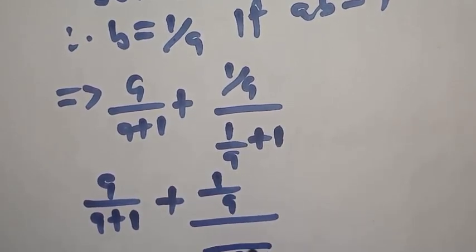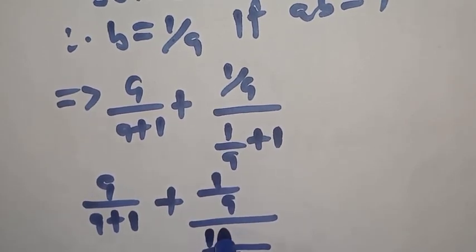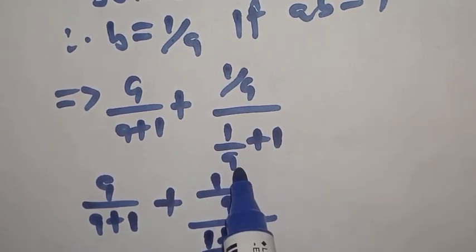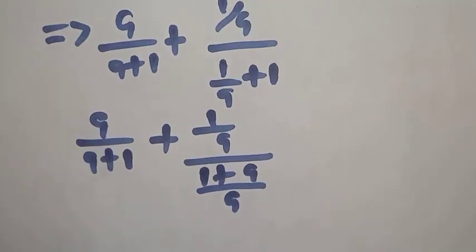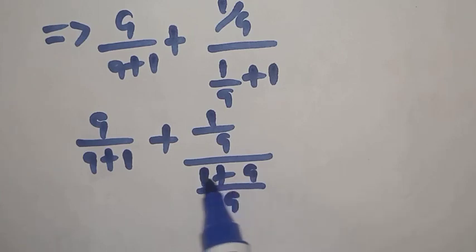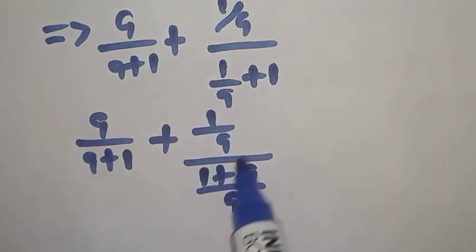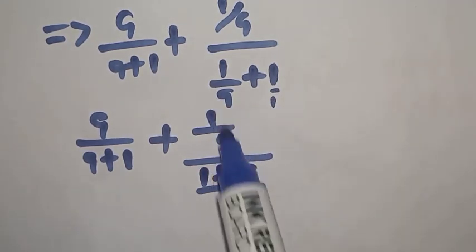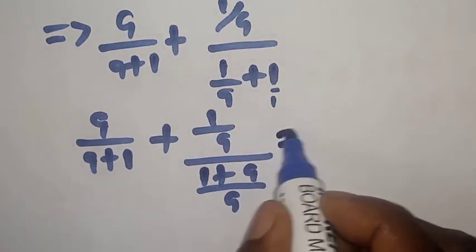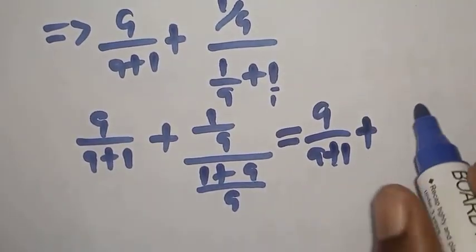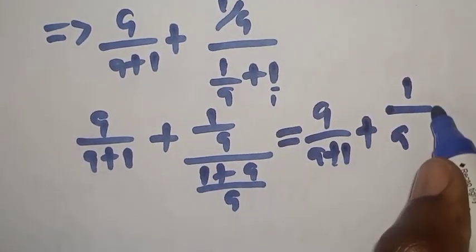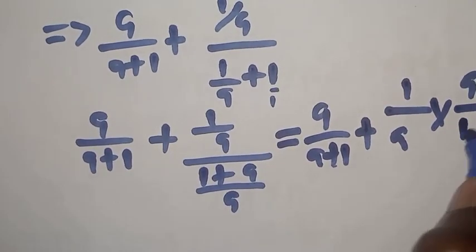The LCM is A. A goes into A is 1, plus 1 goes into A is A, so A times 1 is A. By finding the LCM, we get: A over A plus 1 plus 1 over A, all over — LCM is A — A goes in A is 1, 1 times 1 is 1, plus 1 over 1, 1 goes in A is A, A times 1 is A. This can be written as: A over A plus 1 plus 1 over A times A over 1 plus A.